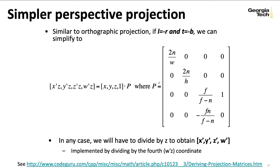So just as we saw with orthogonal projection, rarely do I need the full flexibility of having a separate L and R and T and B. Usually I can assume that there's some symmetry going on.